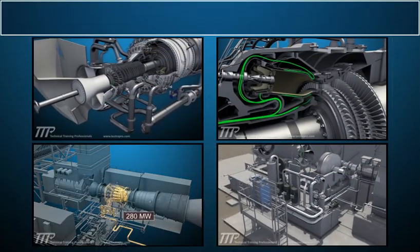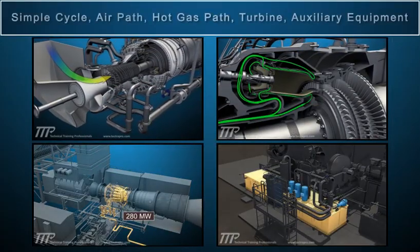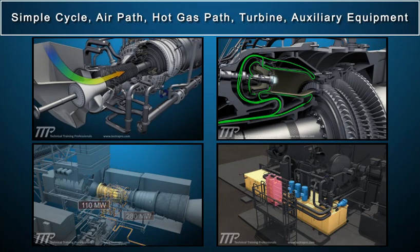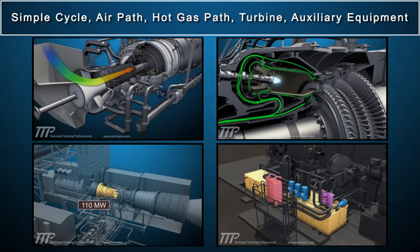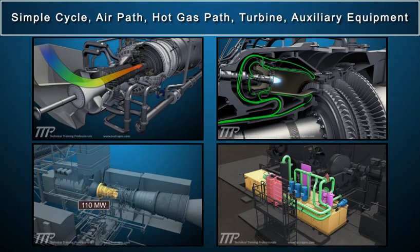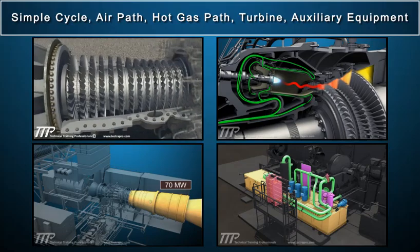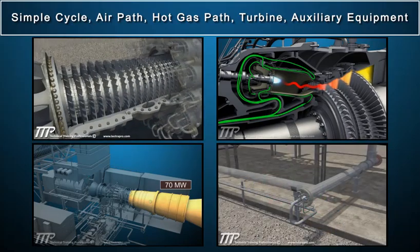The Gas Turbine section includes the following chapters: Simple Cycle, Air Path, Hot Gas Path, Turbine, and Auxiliary Equipment.